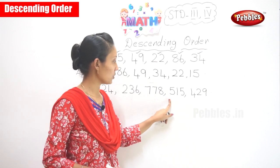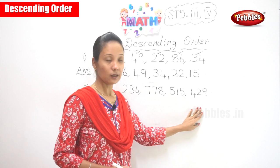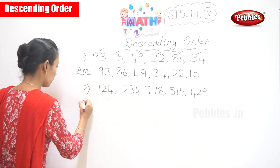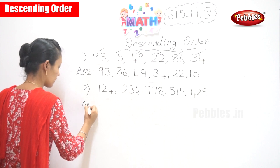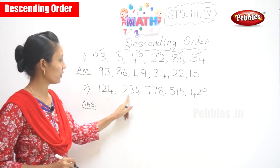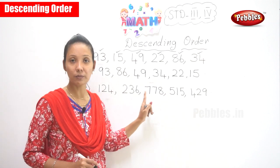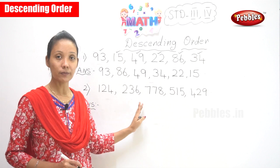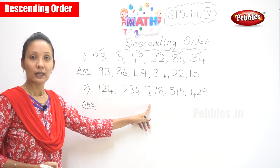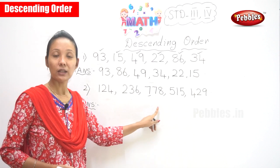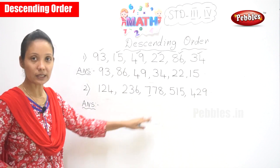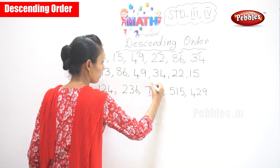And 515, 429, 529. Now shall we write the answer? So see the first number — which is the bigger one? The first digit which is the biggest is 7. So what is that number? It is 778. So can we tick it out? Yes.